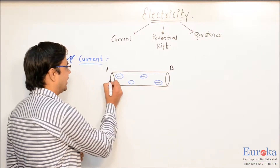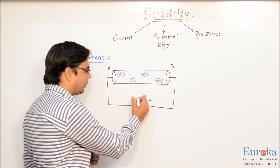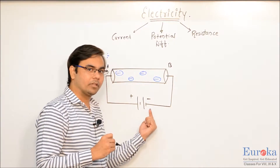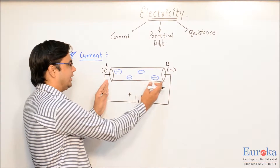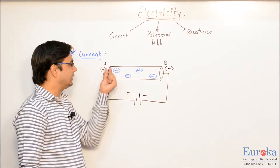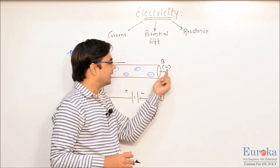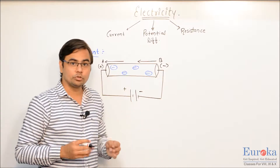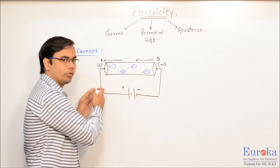If we want to obtain current, we need to ensure all these electrons start to flow in one particular direction. To obtain that, we will connect a battery with this conductor. The positive terminal is connected to end A, so end A becomes positive. The negative terminal is connected to end B, so B becomes negative. The positive end A attracts the negative electrons, while end B repels them. So the electrons will go from the negative terminal to the positive terminal, causing flow of electrons in one direction.